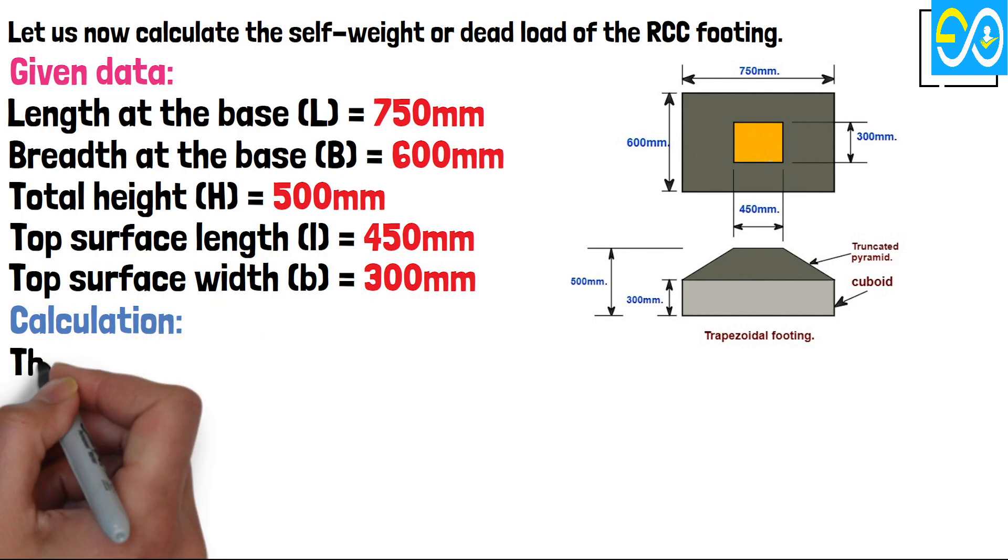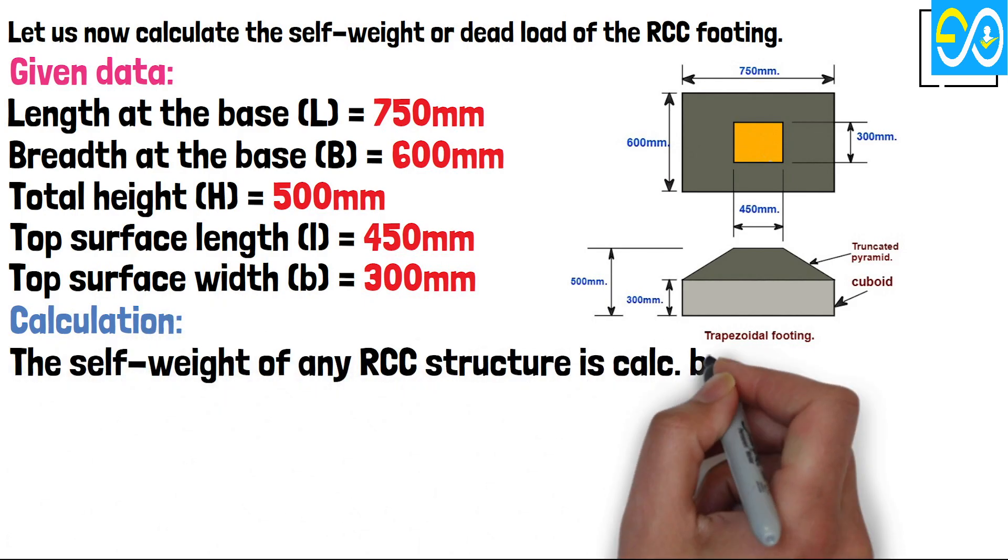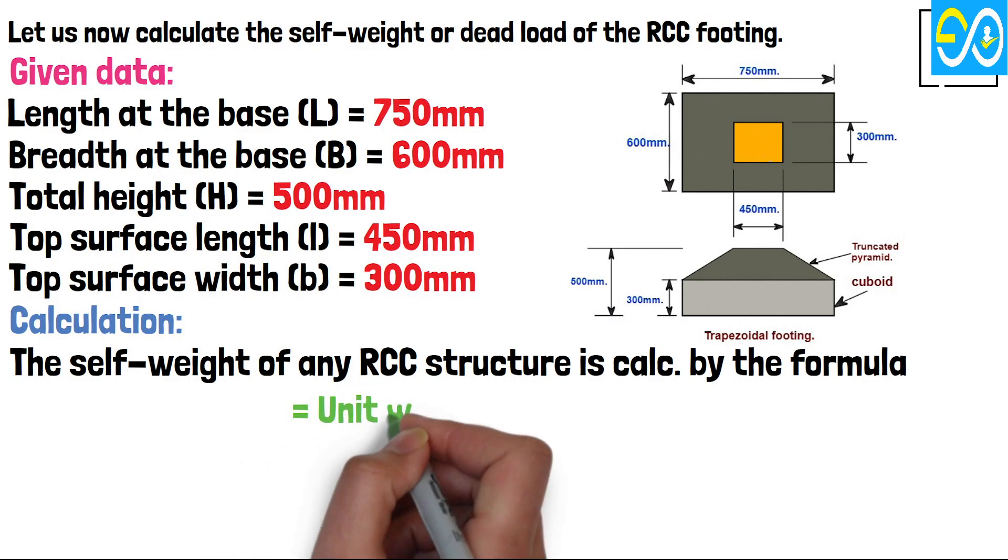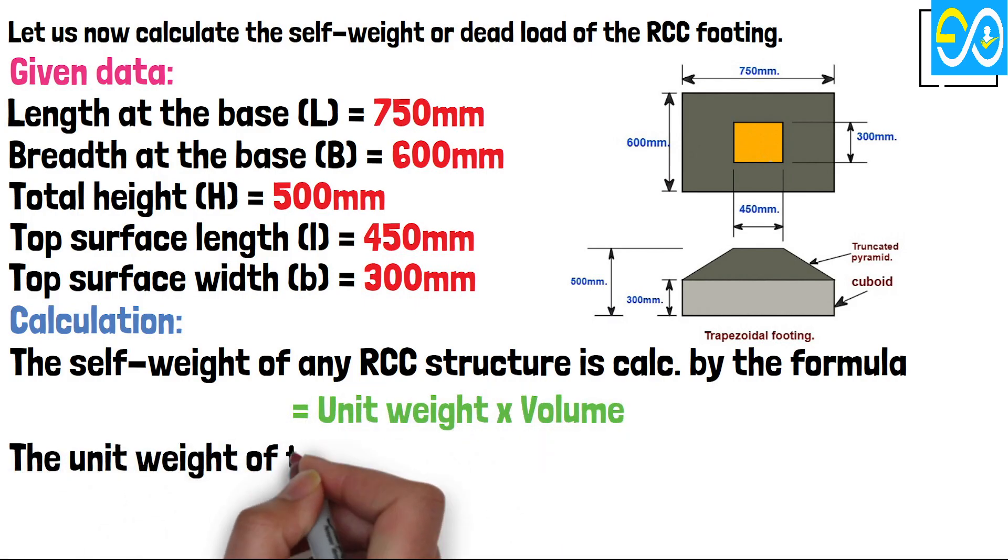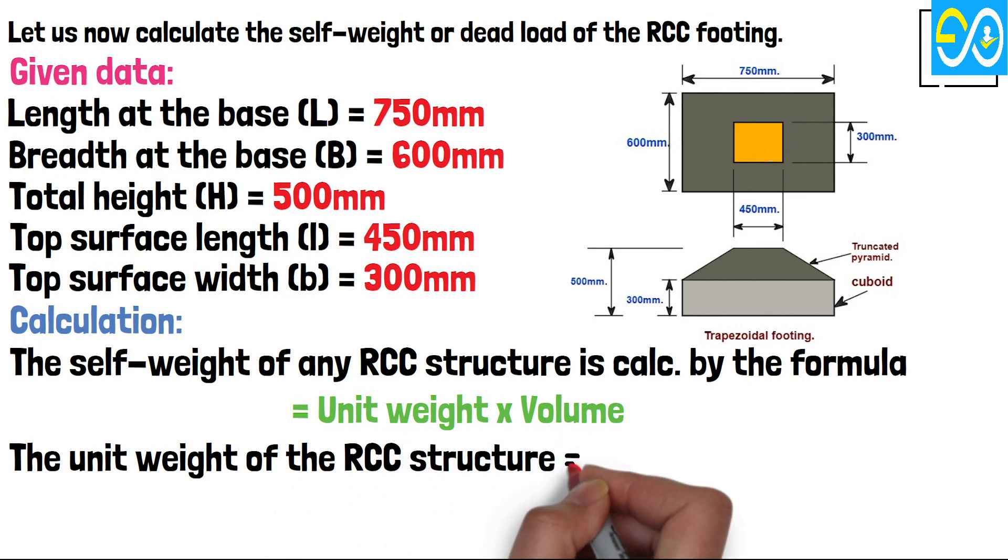Calculation. The self-weight of any RCC structure is calculated by the formula: equals unit weight times volume. The unit weight of the RCC structure equals 2500 kilogram per cubic meter.